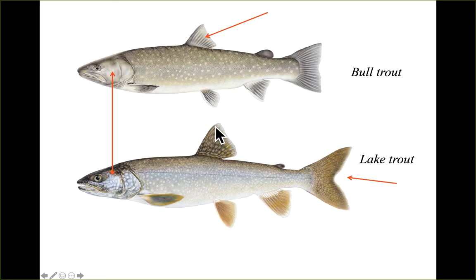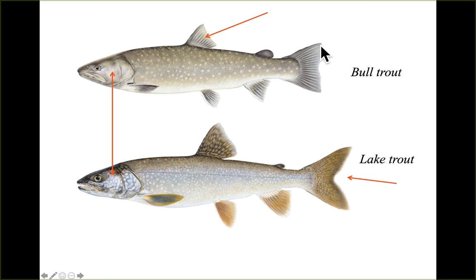A common fish to mix up is bull trout versus lake trout. Bull trout have no mottled coloration on their operculum, while lake trout have splotching. Bull trout have much less of a forked caudal fin than lake trout — lake trout have a deep fork while bull trout do not. And once again, bull trout have no coloration on their dorsal fin, while lake trout have a mottling pattern.